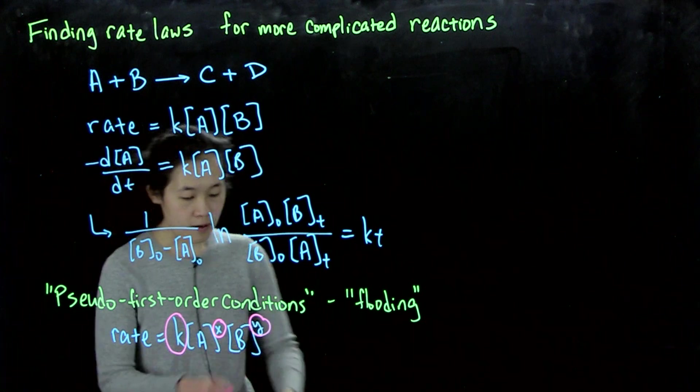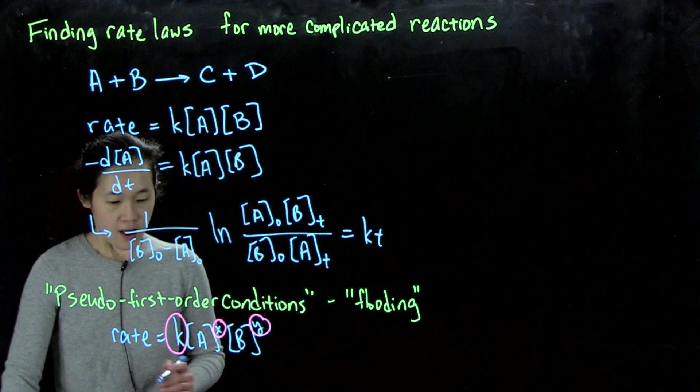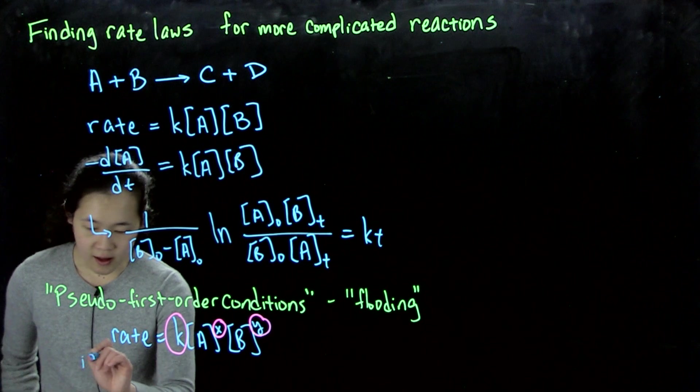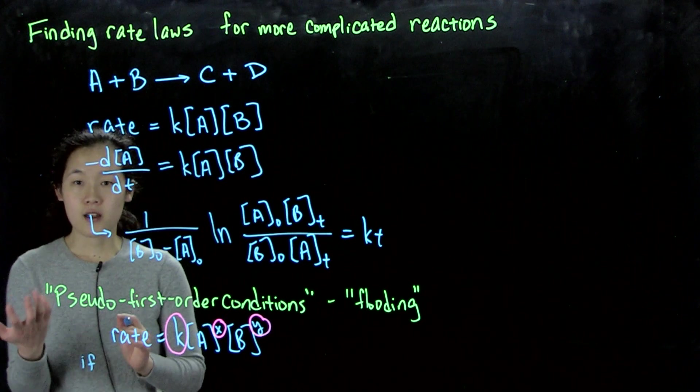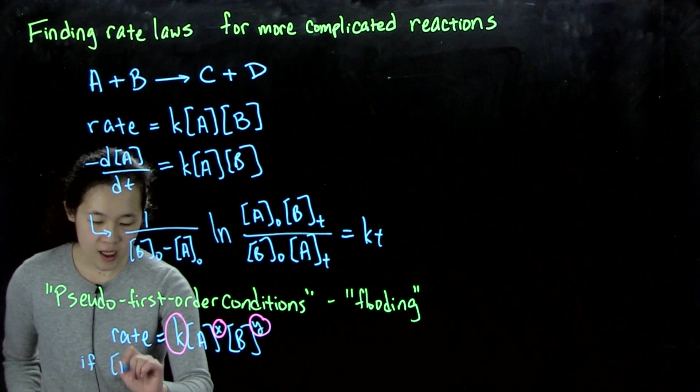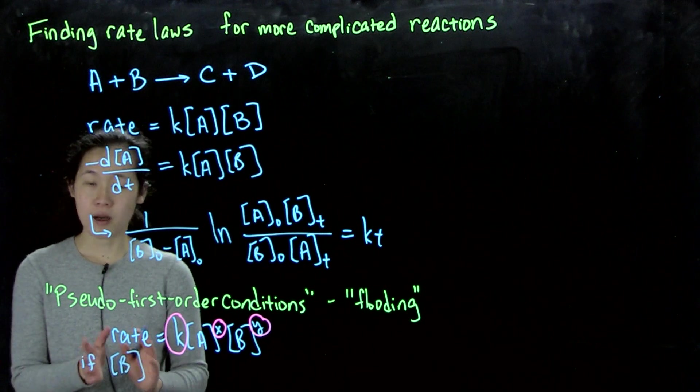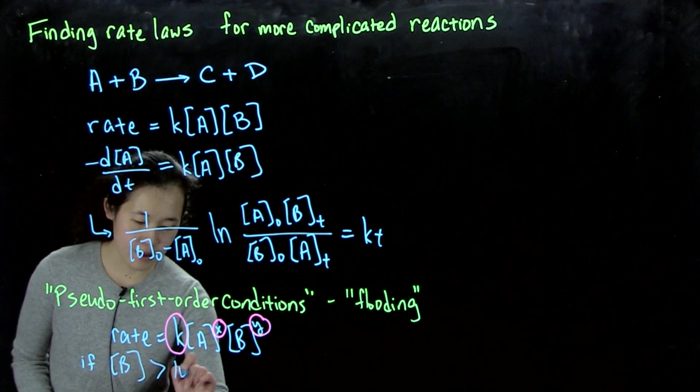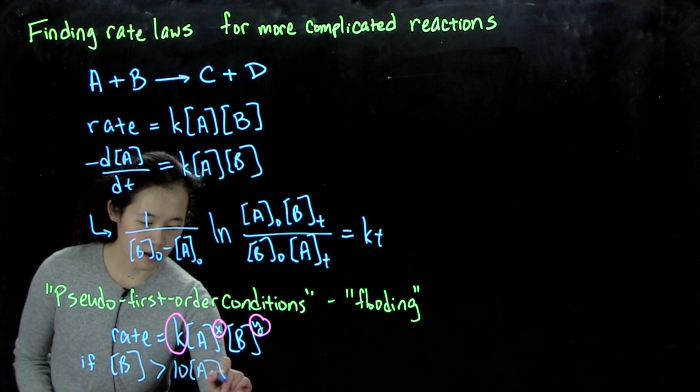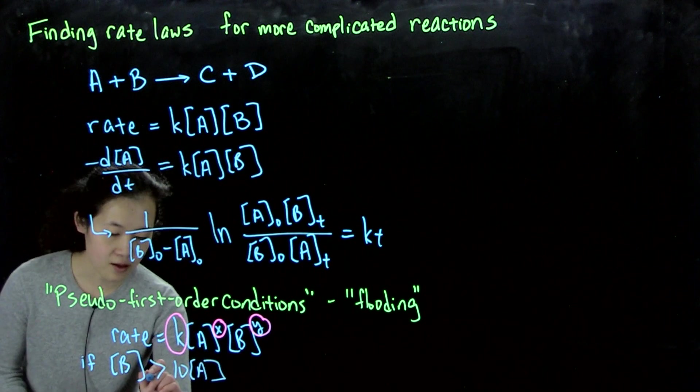So what we do for pseudo-first-order conditions, what we can do is, if we set, if we use a huge ton of reagent B. So let's say if B, the typical number you want to do is greater than 10 times A. So these will be our initial concentrations.